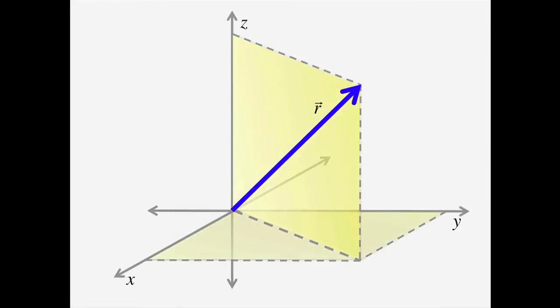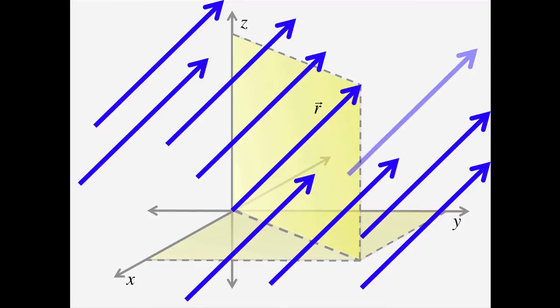Another important property of vectors is that the initial point doesn't matter. Any vector pointing in the same direction with the same magnitude represents the same vector.